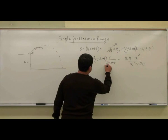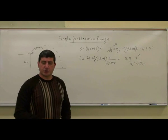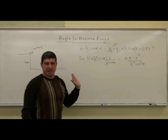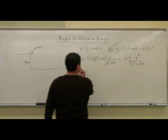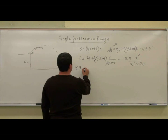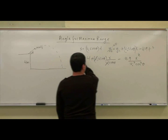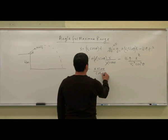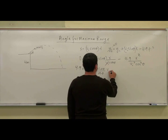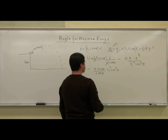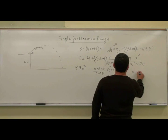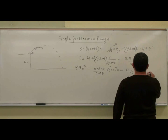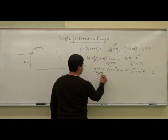The v-initial terms cancel. Multiplying everything by v-initial squared cosine squared theta to clear the denominators, and moving all terms to one side, we get: 4.9x squared minus x times v-initial squared times sine(theta) cosine(theta), brought over as minus x sine(theta) over cosine(theta) times v-initial squared cosine squared theta, minus 4 times v-initial squared cosine squared theta equals 0. After cancellation, cosine theta and cosine theta cancel, and we can call x our range r.